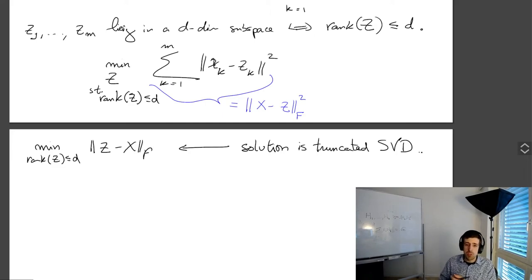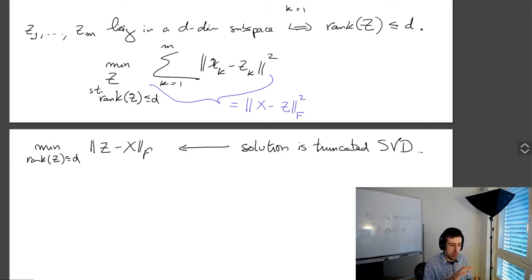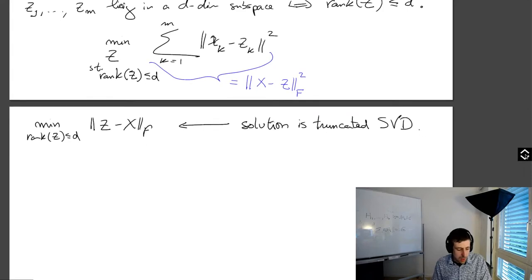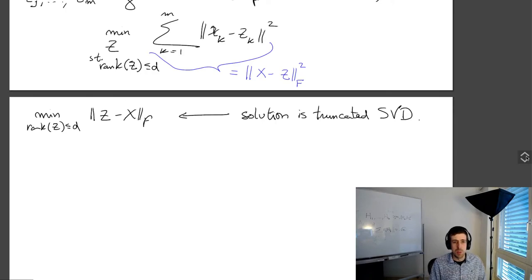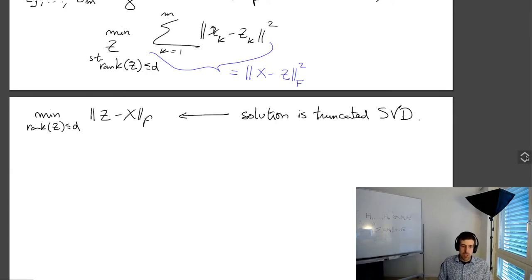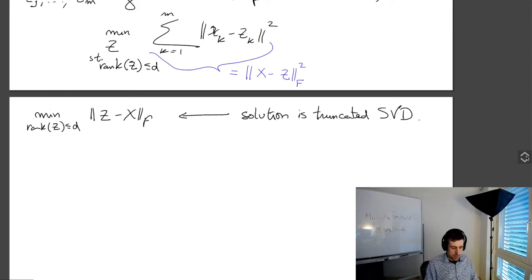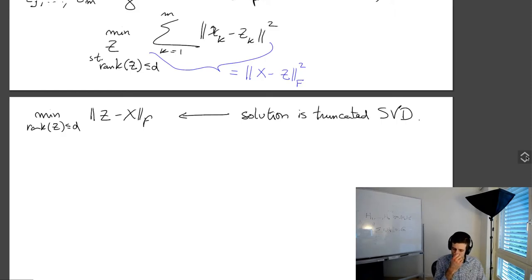So those pictures I showed you of the projection of the genomes of different people in Europe was just done with an SVD. You take the SVD and then you look at the top singular vectors.